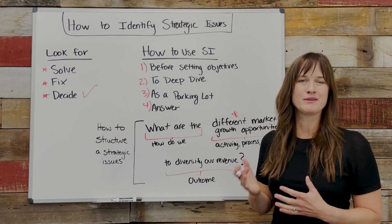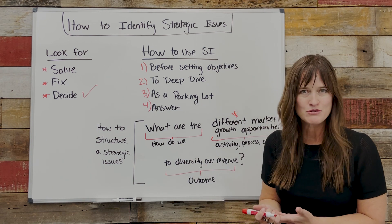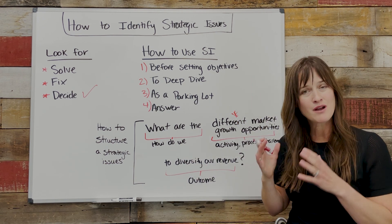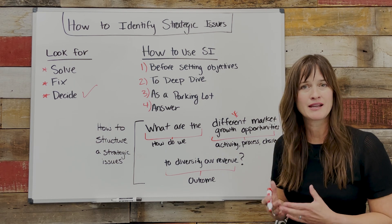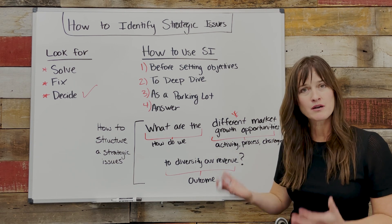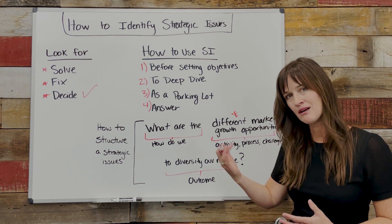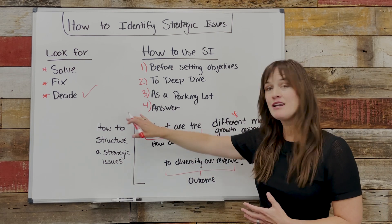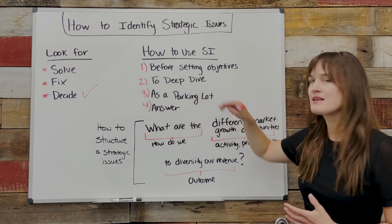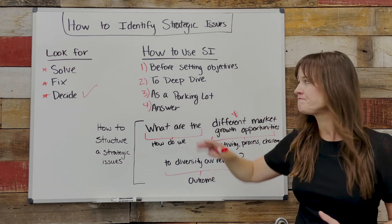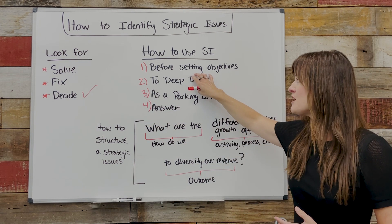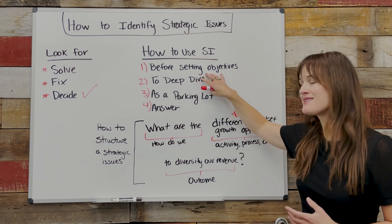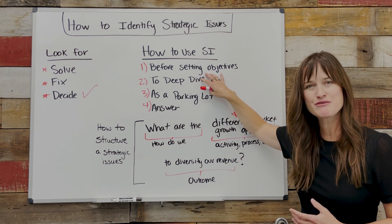I would recommend that you only have a handful of strategic issues — really call out the stuff that is critical to answer as part of your process. Keep it to less than half a dozen. And here's how you use them: you need to answer these questions before you go into setting objectives for the year.